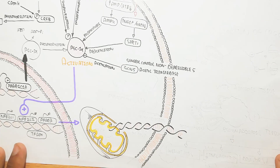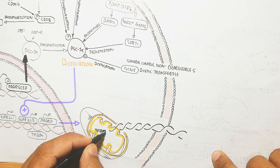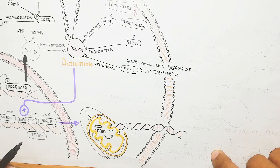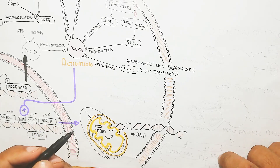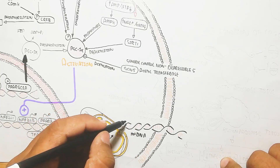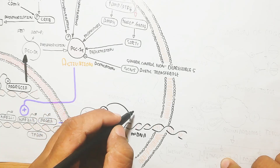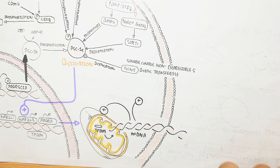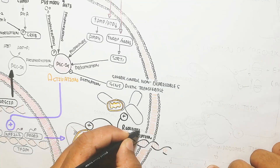TFAM (mitochondrial transcription factor A) transcribes and translates proteins important for mitochondrial biogenesis. TFAM also self-regulates via mitochondrial DNA. Ultimately, PGC1-alpha activation triggers the replication of mitochondrial DNA and the transcription and translation of proteins essential for mitochondrial biogenesis.